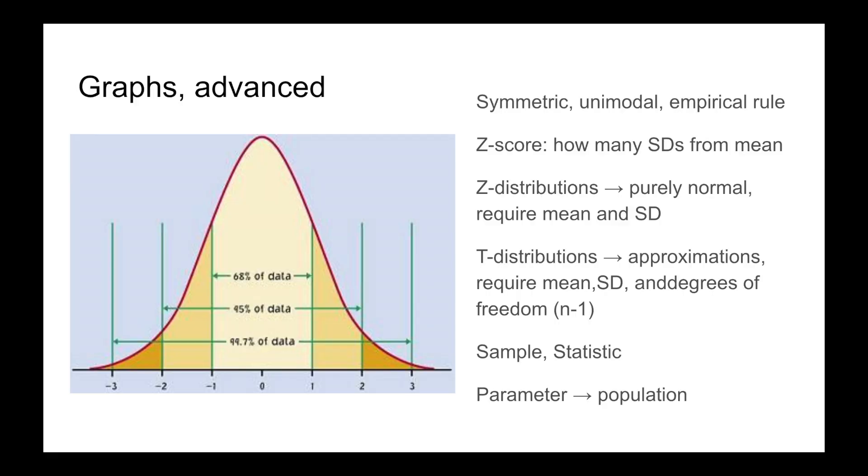I think the biggest takeaway from this unit is really understanding what a normal curve is. It's a bell-shaped density curve that is symmetric, unimodal, meaning it has one mode, and it follows something called the empirical rule: 68% of the data lies between plus or minus one standard deviation, 95% of the data in plus or minus two standard deviations, and 99.7% of the data in three standard deviations. A z-score is how many standard deviations away you are from the mean. All you need to construct a normal curve is a mean and a standard deviation, and you'll see that on your calculator with the normal CDF and the inverse norm functions.